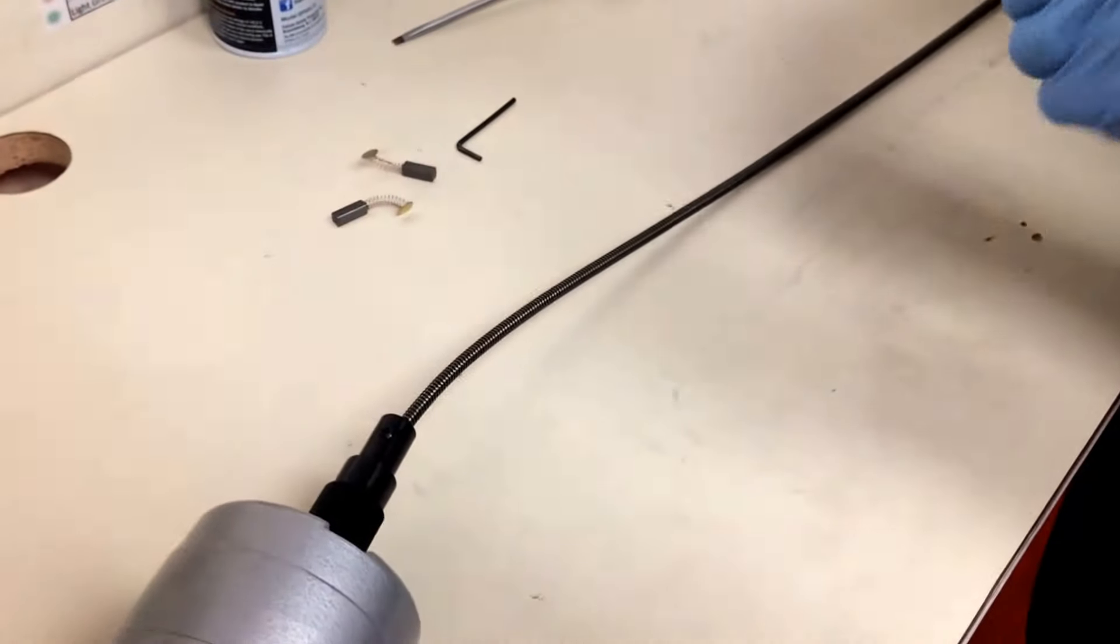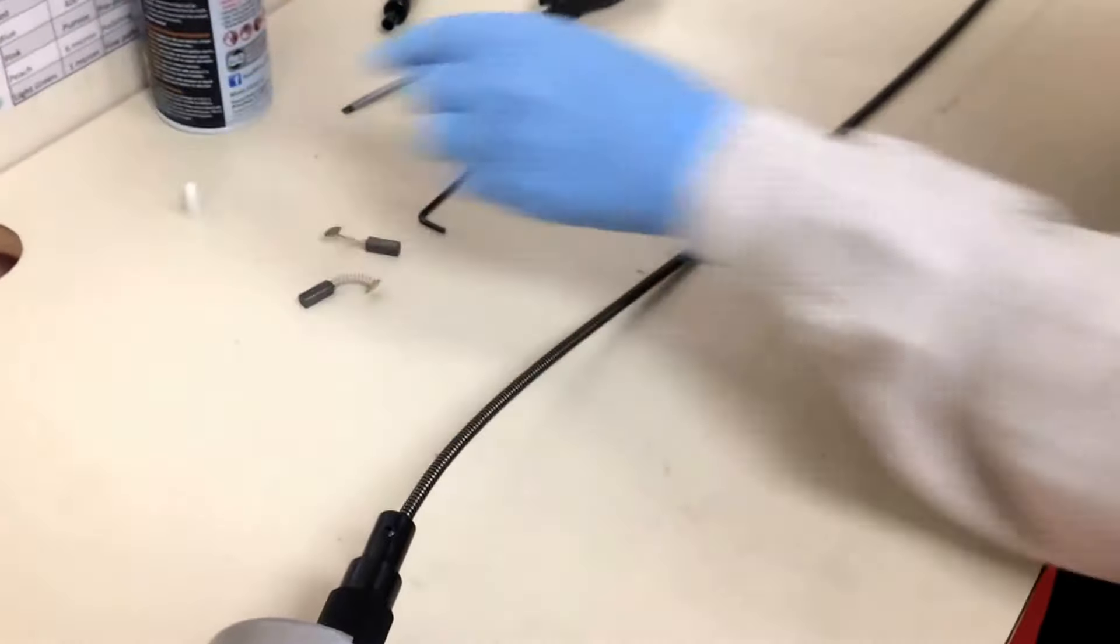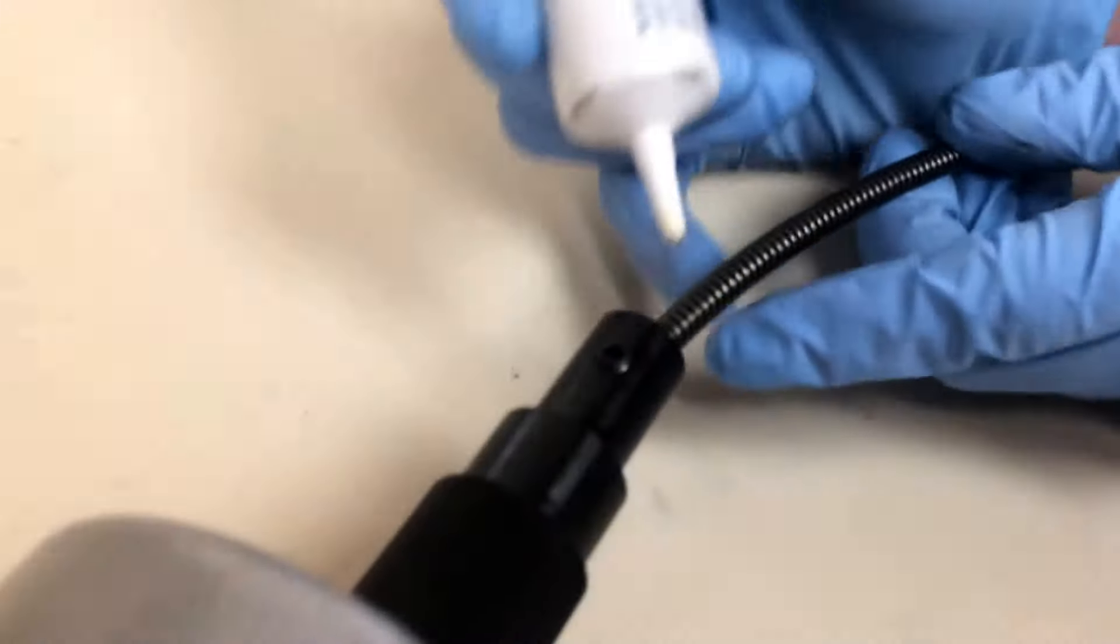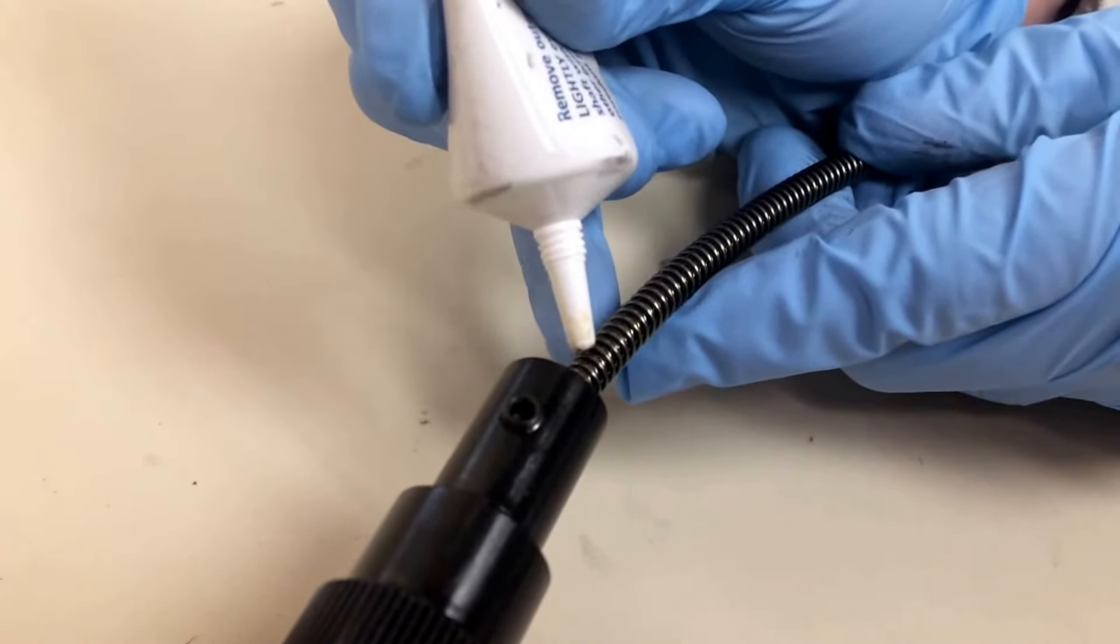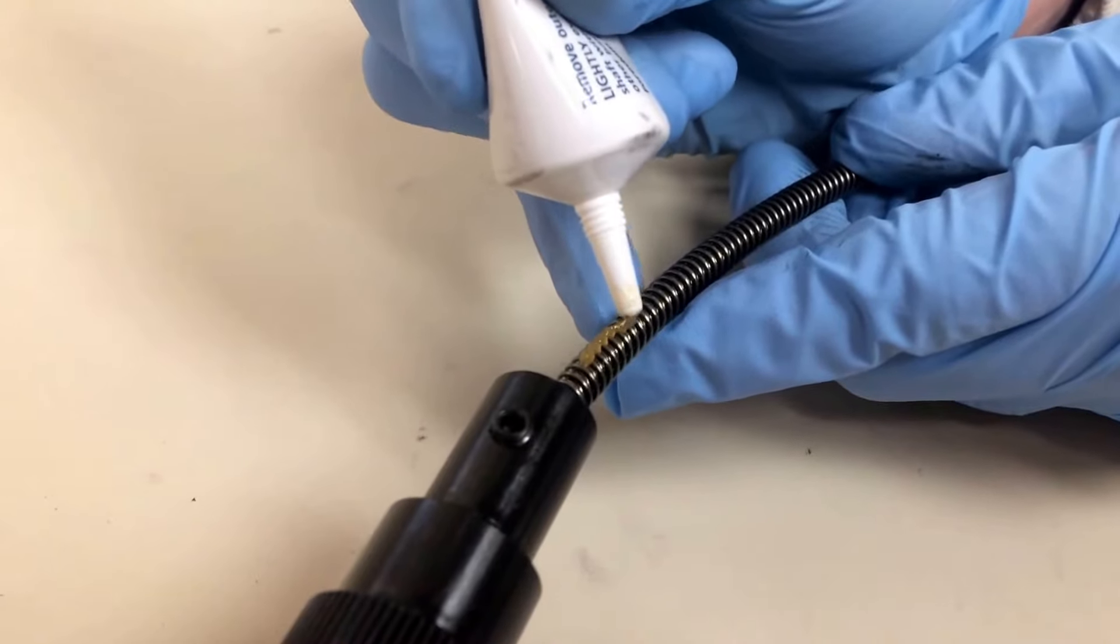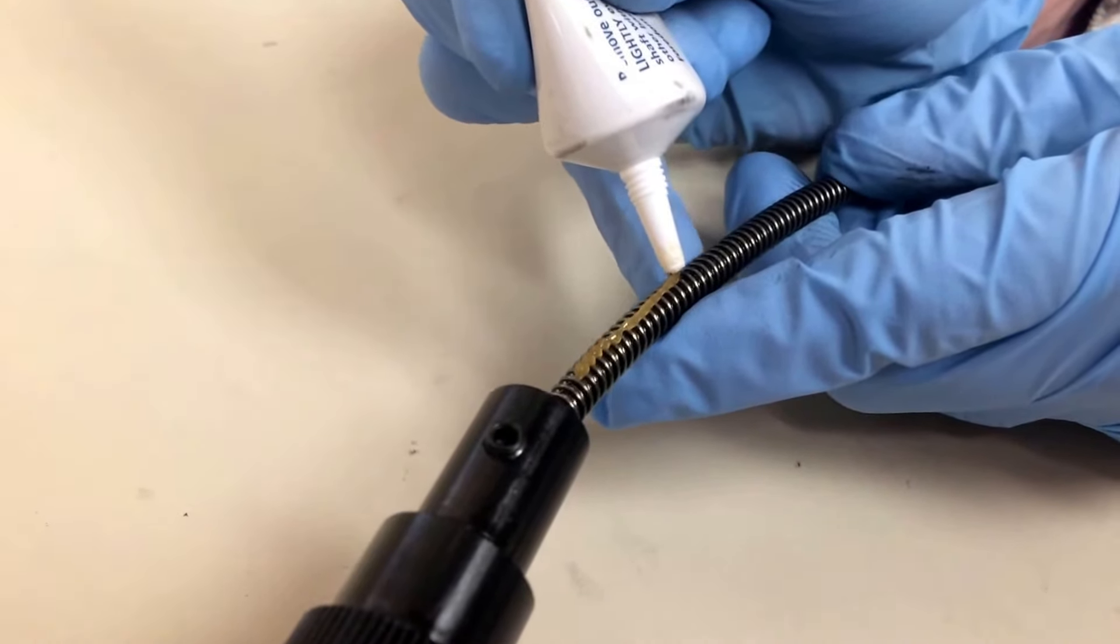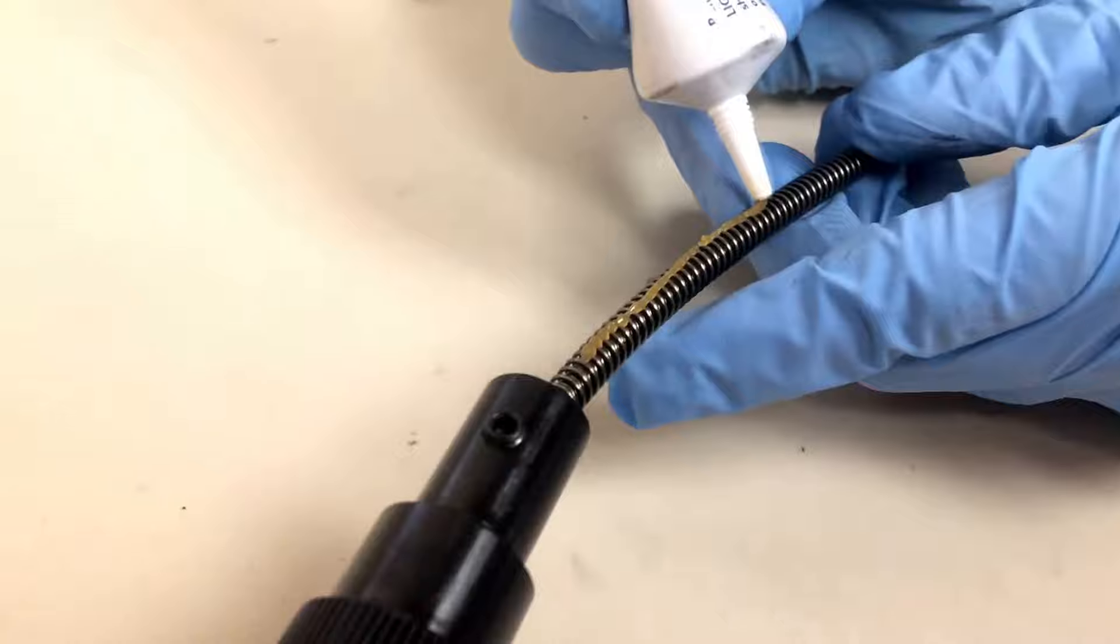So you're going to take your lubricant and you want to draw a very thin stripe all the way down. You don't want to put a lot on there, you'll end up wiping it off. So you just want it to look like this all the way down.